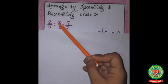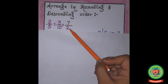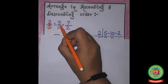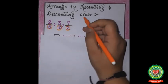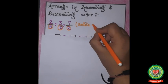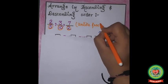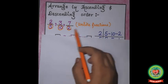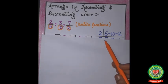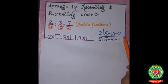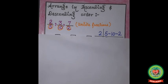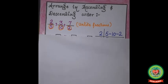Now let's take one more example when fractions are unlike: 2 upon 5, 3 upon 10, and 7 upon 2. The denominators are different, so these are unlike fractions. In case of unlike fractions, first we will find the LCM of the denominators 5, 10, and 2.